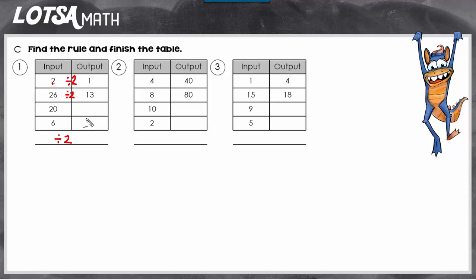So to finish the table, you just look at the input, 20, and divide it by 2. So 20 divided by 2 is 10. 6 divided by 2 is 3.